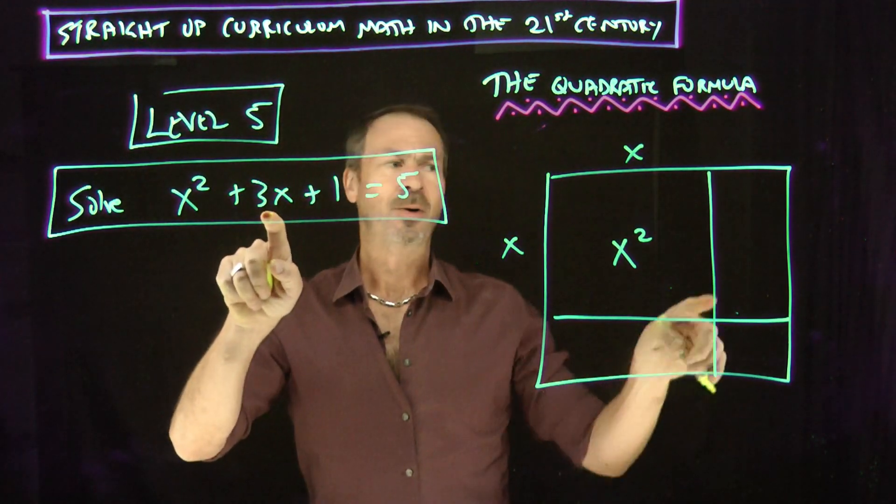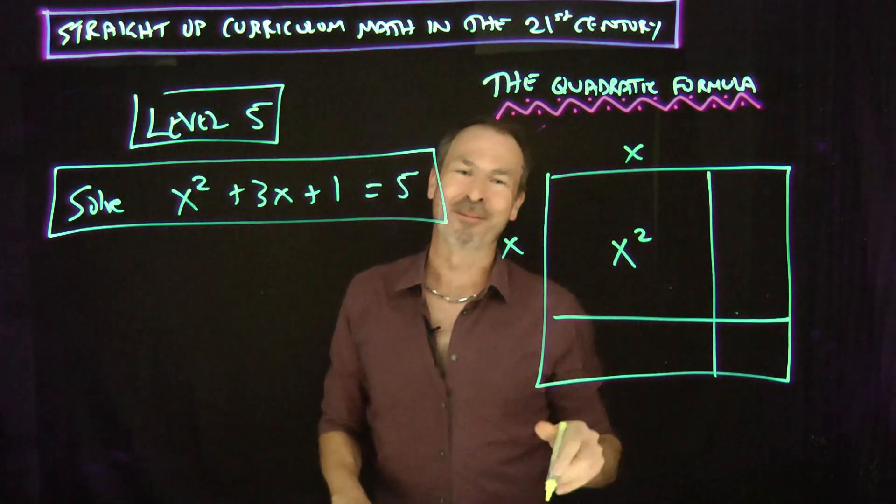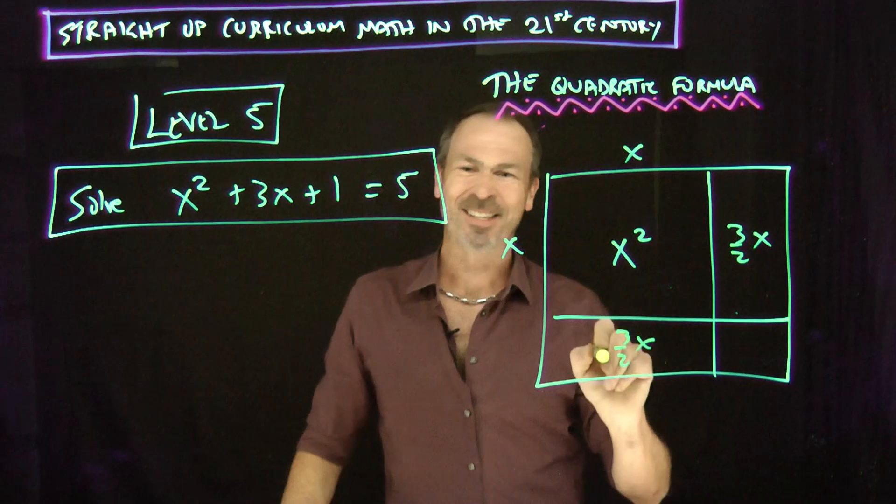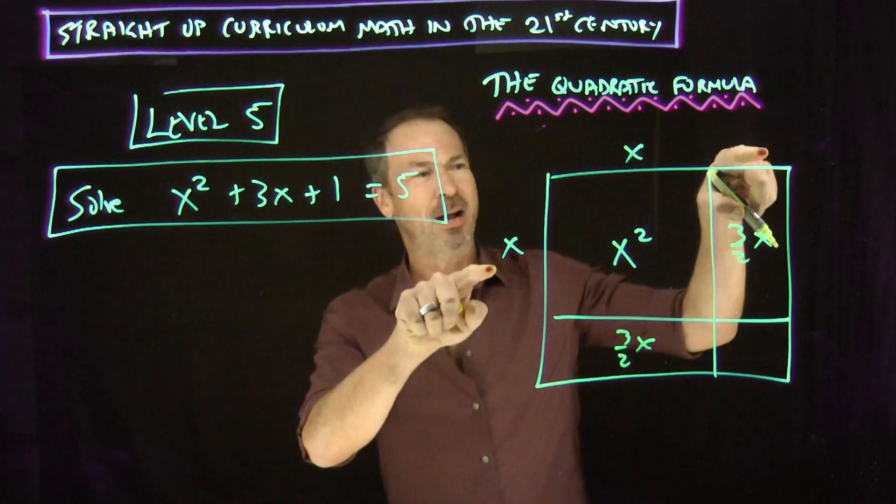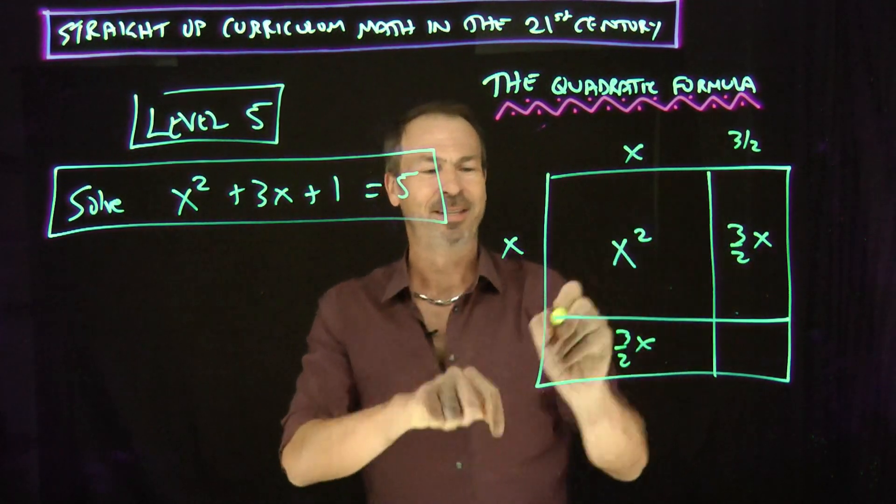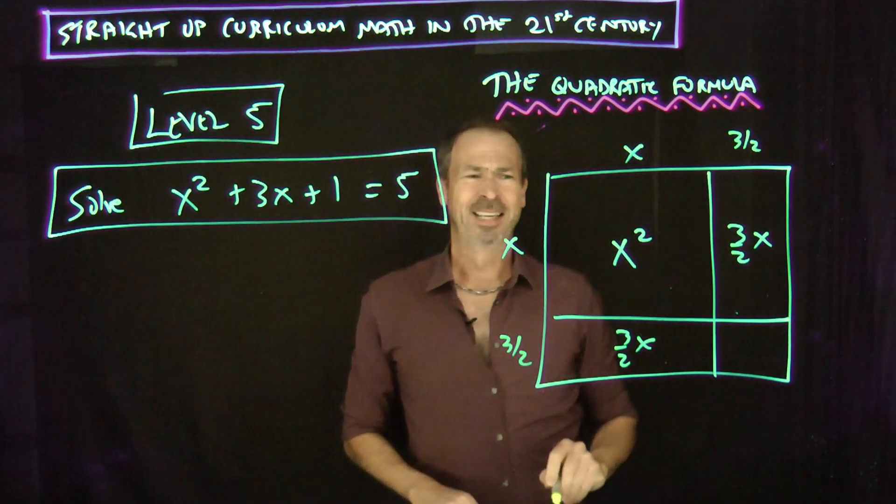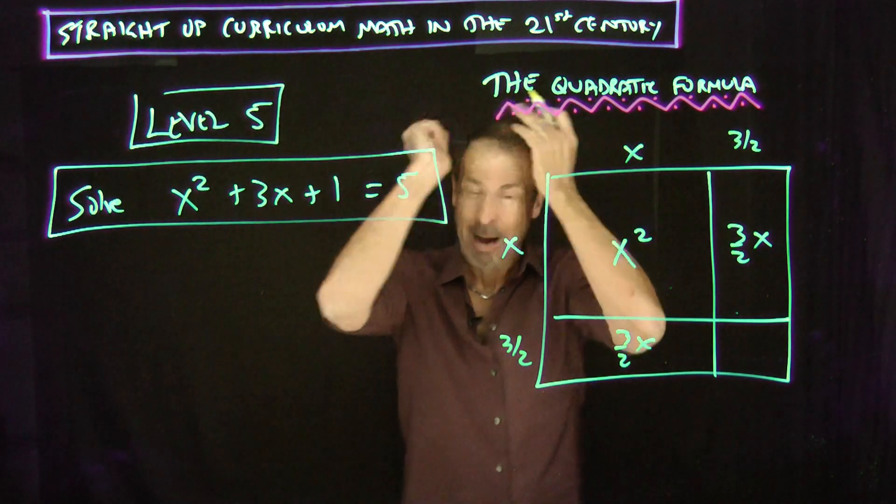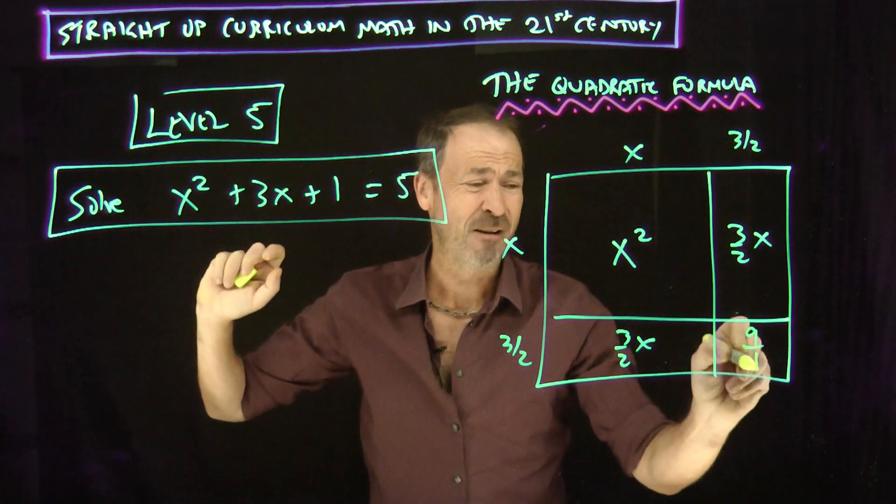3x. Oh. 3x gets split into two even parts. So that's what? 1 and 1 half x. And 1 and 1 half x. Which means this must be 1 and 1 half times x. 3 halves. 3 halves. 1 and 1 half. Which means this piece is what? 3 halves times 3 halves. Uh-oh. I'm in fraction land. 9 fourths.